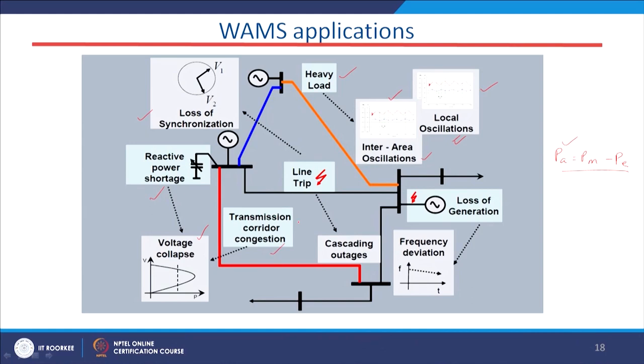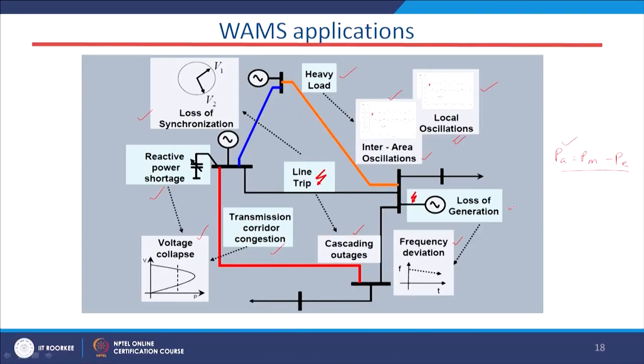Transmission corridor congestion is also addressed — if a particular transmission line supplying power from one bus to another becomes overloaded, there is congestion. Without knowing the status of the line, no decision can be taken to divert power, but this decision can be made using WORMS technology. Other focus areas include cascading outages, frequency deviations, and loss of generation — areas where WORMS can be utilized for better operation of the smart grid system.